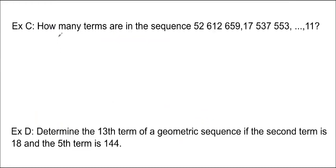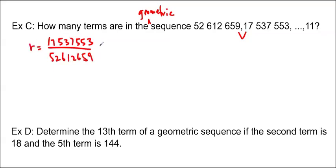Let's try some more questions. How many terms are in the sequence? This giant number, 52,612,659, this giant number, 17,537,553, all the way down to 11. And actually this should say that it is a geometric sequence. So in order to do this, I need to find the first ratio. So 17,537,553 over 52,612,659 is going to end up being our R, our ratio. And if you do this on your calculator, you'll find this actually equals 1 third. So that's convenient. And we also know that A equals 52,612,659.